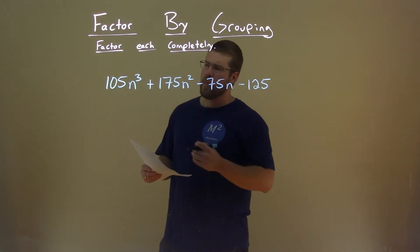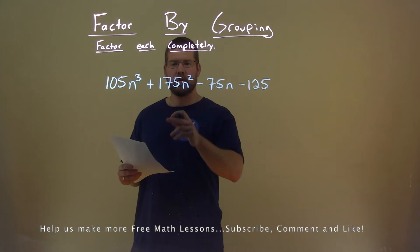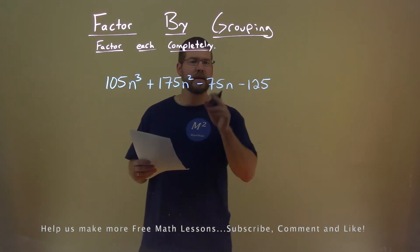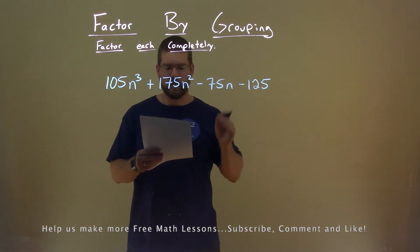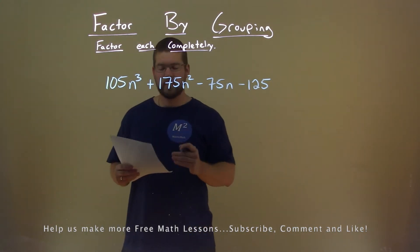We're given this problem right here, 105n³ + 175n² - 75n - 125, and we want to factor this completely.